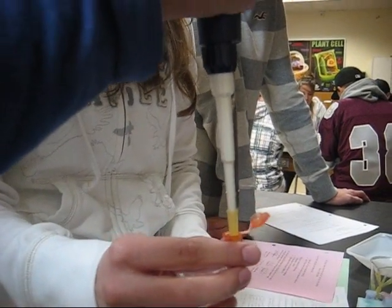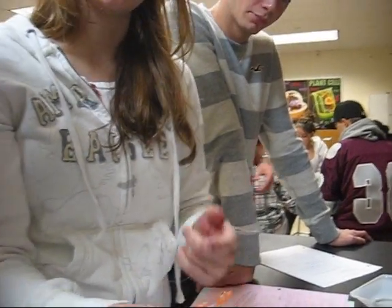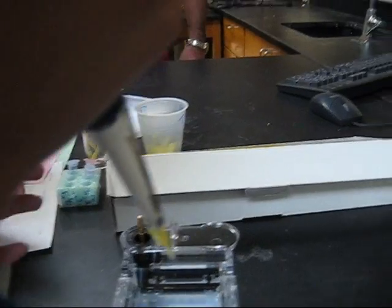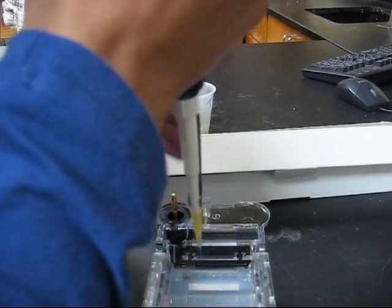Now, Winnie is going to load 20 microliters of the Eco-RI digest with its mix of the dye into the fourth well. So go all the way in first.